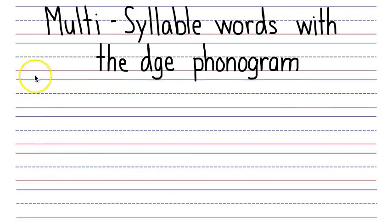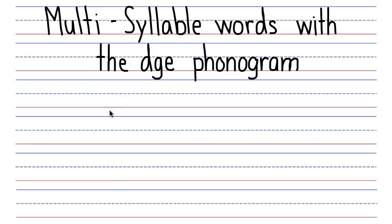Now let's write five multi-syllable words with the DGE phonogram. In multi-syllable words, when a syllable ending in DGE is followed by a syllable beginning with a vowel — such as ED, UR, ET, ING, or E — the E in DGE is dropped. I'll show you what I mean.